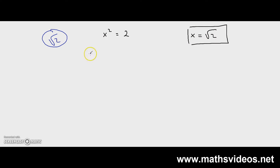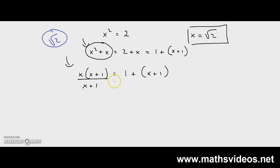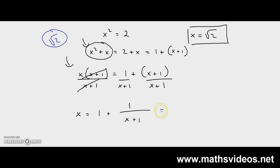From here, we say that x squared plus x is equal to 2 plus x, which is in fact equal to 1 plus x plus 1. We also factorise this side of the equation. If we do this, we get x multiplied by x plus 1 is equal to 1 plus x plus 1. But we need to know what x is on its own, so we divide each and every element of this equation by x plus 1. If we do this, we're left with x equals 1 plus 1 over x plus 1, which is in fact equal to 1 plus 1 over 1 plus x.